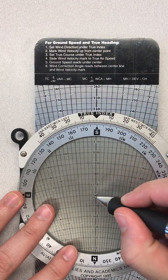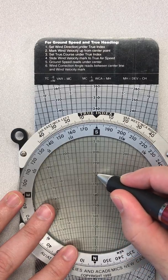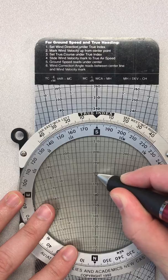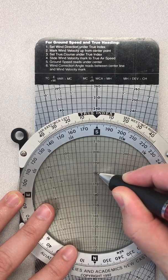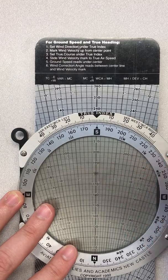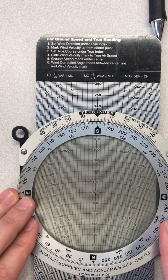So about 160, so 170 would be 10, 180 would be 20, and so make a nice solid mark there. That's our wind dot. Use a pencil because you're going to be making a lot of these and erasing them.